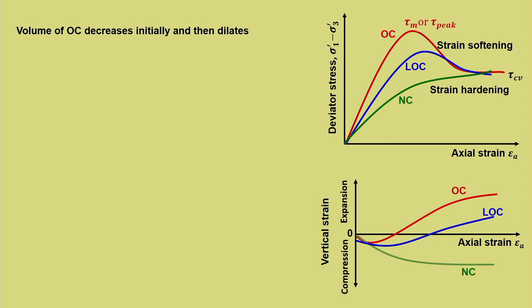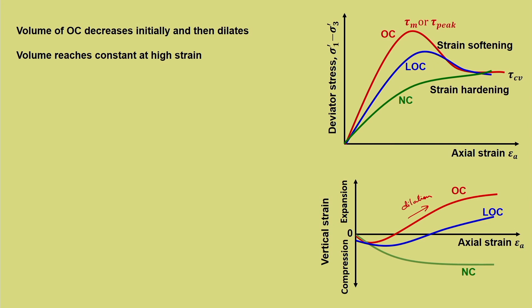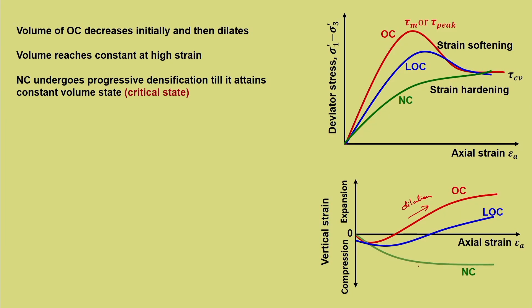Now we will see what happens to the drained volumetric change response. Volume of OC — over-consolidated — decreases initially and then it dilates. This dilation happens with increase in axial strain, and volume reaches constant at high strain. At high strain, the concept of critical void ratio comes into picture and the volume essentially becomes the same. Normally consolidated undergoes progressive densification till it attains constant volume state, which is the critical state.